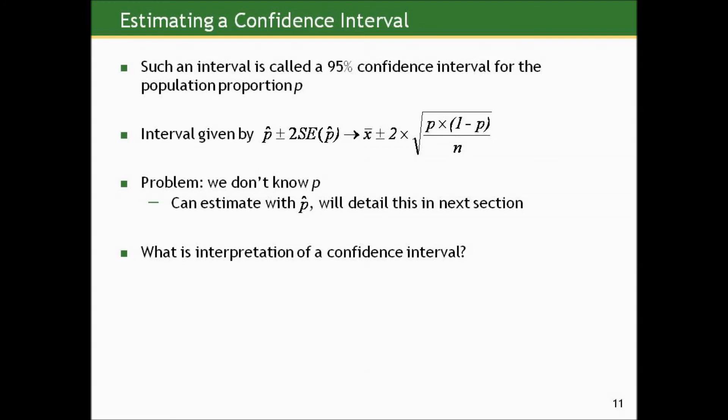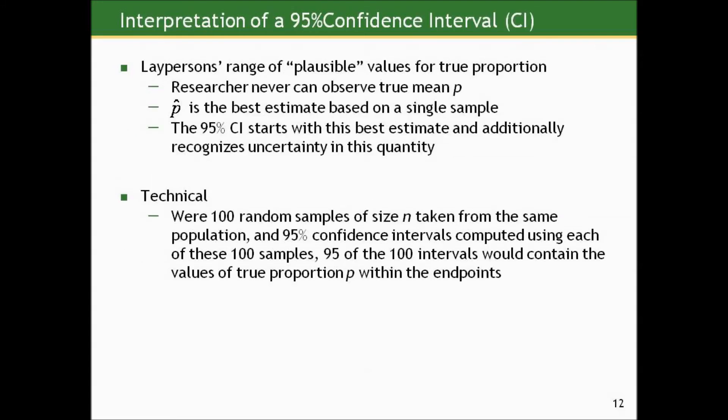What's the interpretation of the confidence interval for a population proportion? It's the same interpretation as we had for means. It gives a range of plausible values for the true proportion using the results from one single imperfect subsample of that population. The researcher can never observe the true proportion. P hat is the best estimate based on a single sample. And the 95% confidence interval starts with this best estimate and then additionally recognizes uncertainty in the quantity.